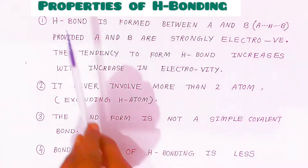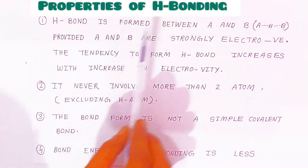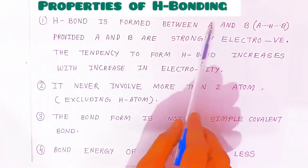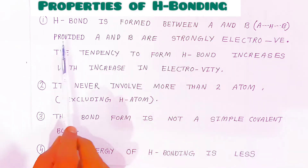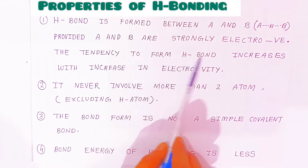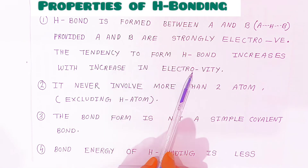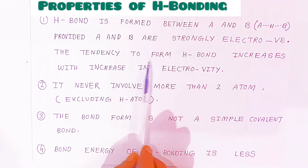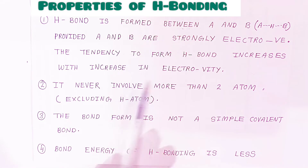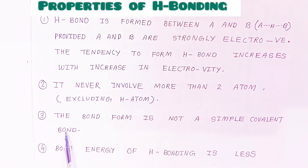Now let us see some properties of hydrogen bonding. A hydrogen bond is formed between A and H...B, where A and B are strongly electronegative atoms. The tendency to form hydrogen bonds increases with increasing electronegativity. It never involves more than two atoms excluding the hydrogen atom. The bond formed is not a simple covalent bond.